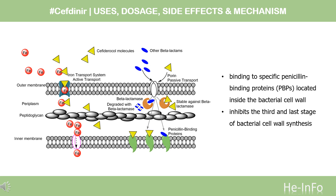Mechanism of Action: The 5-member thiazolidine rings that make up penicillins are replaced in cephalosporins by a 6-member dihydrothiazine ring, conferring greater bactericidal activity. This 6-member ring enables cefdinir and other cephalosporins to resist inactivation by certain bacterial enzymes, with a mechanism similar to other beta-lactam antibiotics.